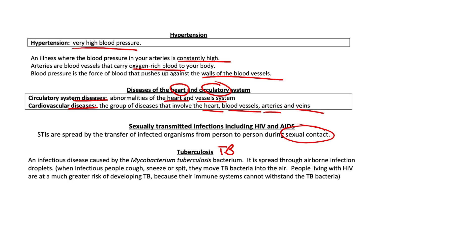It's kind of like COVID — if you had comorbidities, like hypertension, high blood pressure, HIV, or diabetes, it would hit you harder than someone without comorbidities, meaning underlying health issues. So bits and pieces here about hypertension, diseases of the heart and circulatory system, STIs, and TB, all falling under the lifestyle diseases section in life orientation.